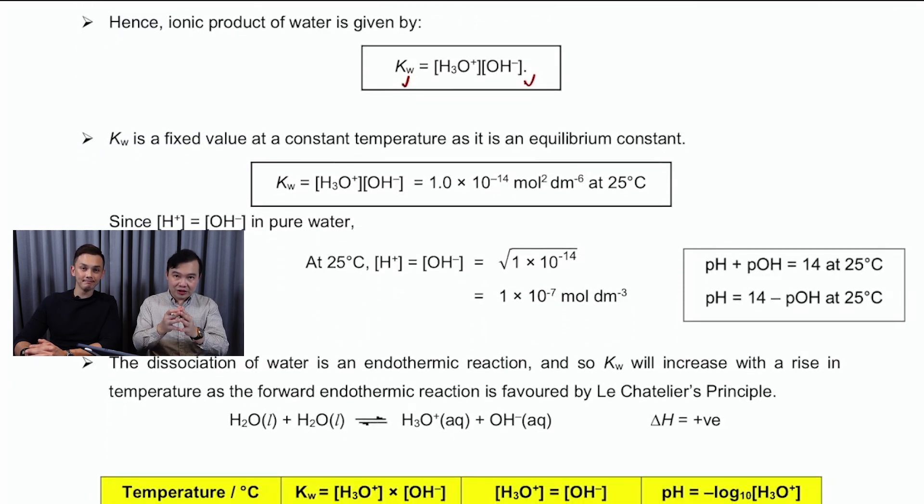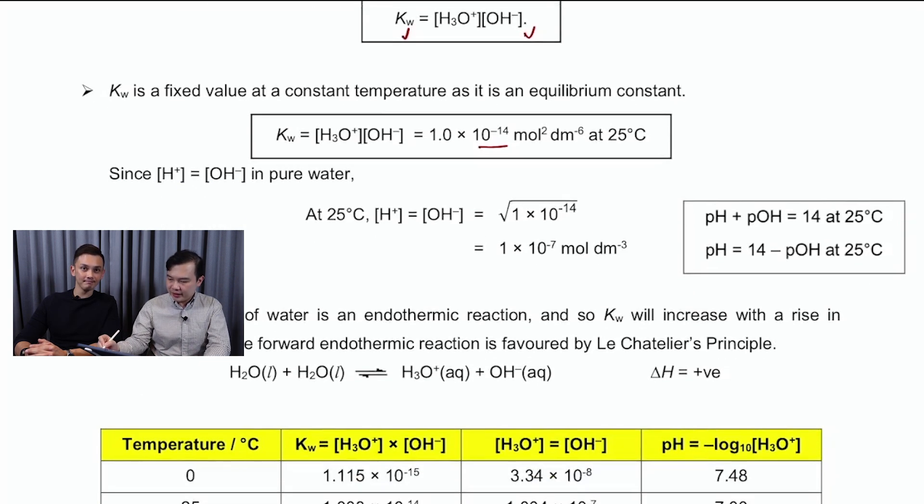At a very specific temperature, which is 25 degrees Celsius, you have to know the number. The number for Kw would always be 10 to the power minus 14. And once again, if your temperature change, then this number will change as well. So we also will have the idea of a pKw. pKw simply once again refers to the negative log 10 of Kw. And if it's at 25 degrees Celsius, the number is once again fixed at 14. This is the reason why when we talk about the pH scale, you realize that the maximum number is always 14.